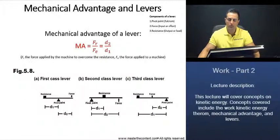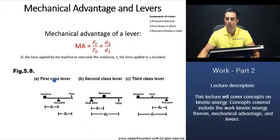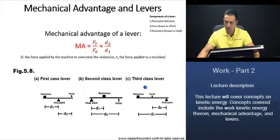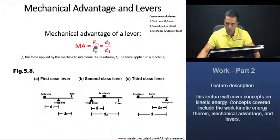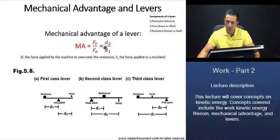Let's take a look at mechanical advantage and levers. A lever has three components: its pivot point, the force, and the resistance — as we see for all three lever classes. The mechanical advantage of a lever is the force applied by the machine to overcome the resistance divided by the effort force, which is equivalent to D2 over D1, where D2 is the distance of the effort force relative to the pivot point, and D1 is the distance of the resistance relative to the pivot point.